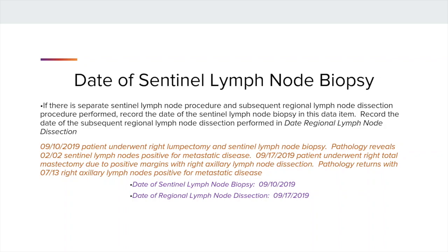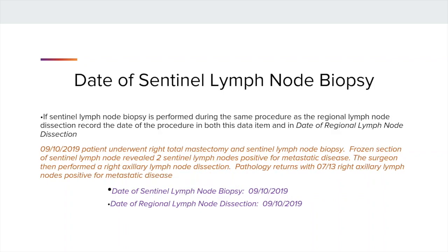For example, on 9-10 the patient underwent a right lumpectomy and a Sentinel Lymph Node Biopsy. On 9-17, a right total mastectomy and axillary lymph node dissection was performed. The date 9-10-19 is recorded in this data item, and 9-17 is recorded in the date of the Regional Lymph Node Dissection.